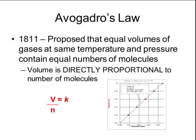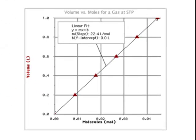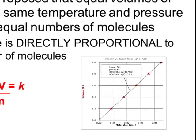In 1811, Avogadro proposed that equal volumes of gases at the same temperature and pressure contain equal numbers of molecules. This number of molecules is what we now know as Avogadro's number, or 6.02 times 10 to the 23rd. What this law essentially means is that volume is directly proportional to the number of molecules. As you can see in the graph, as the amount of molecules goes up, the volume also increases, producing a diagonal line characteristic of directly proportional relationships.